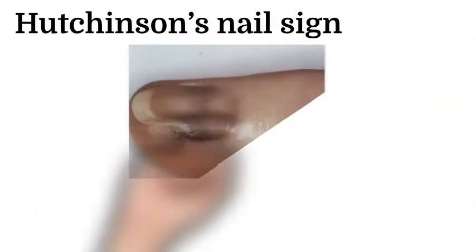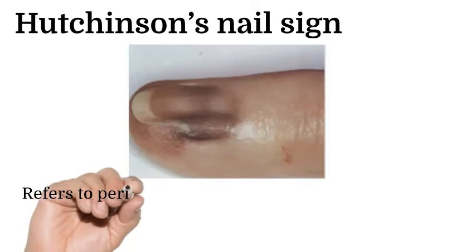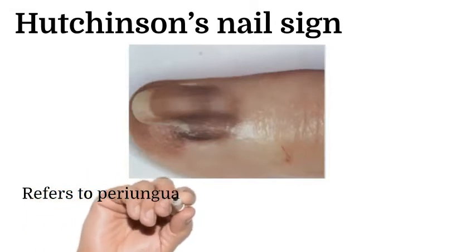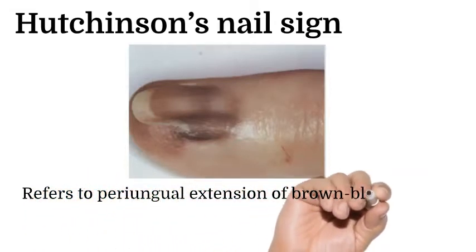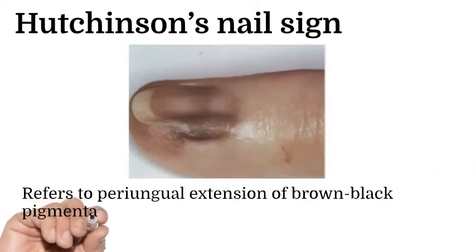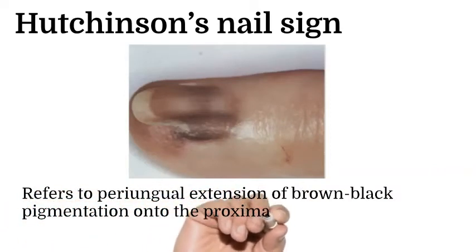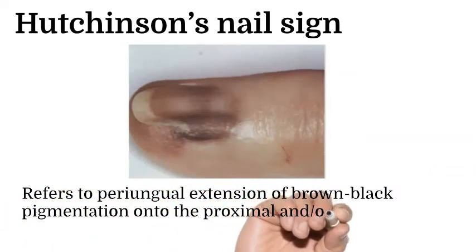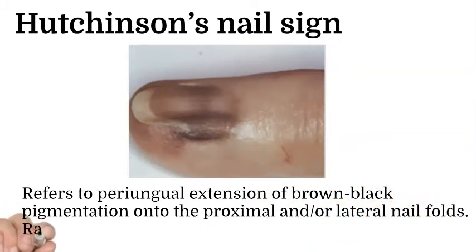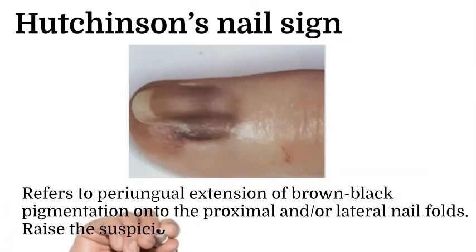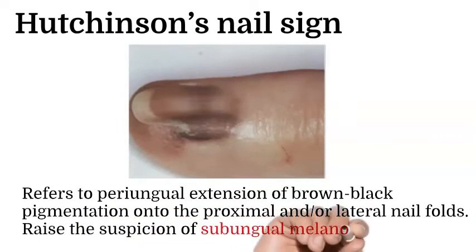Hutchinson's nail sign: this sign refers to angular extension of brown-black pigmentation onto the proximal and/or lateral nail folds, which raises the suspicion of subungual melanoma.